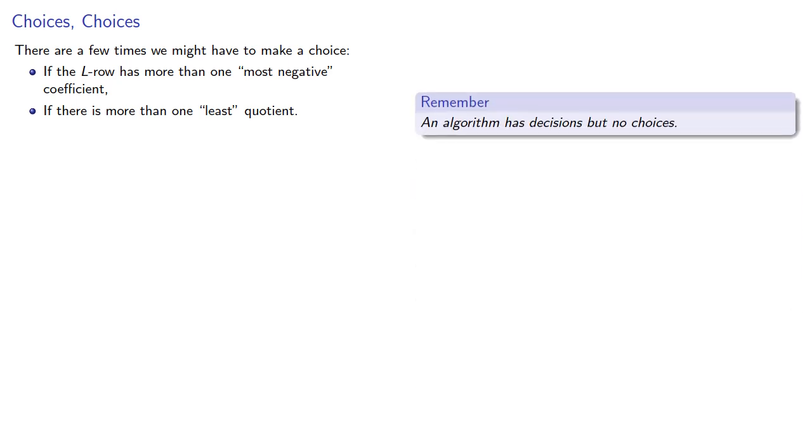There are a few times we might have to make a choice, if the L row has more than one most negative coefficient, and if there's more than one least coefficient. But remember, an algorithm has decisions but no choices. So we need to introduce a rule for how to make a decision, and the standard rule is to use the first variable in our listing, in other words, the variable with least index, at least for now.